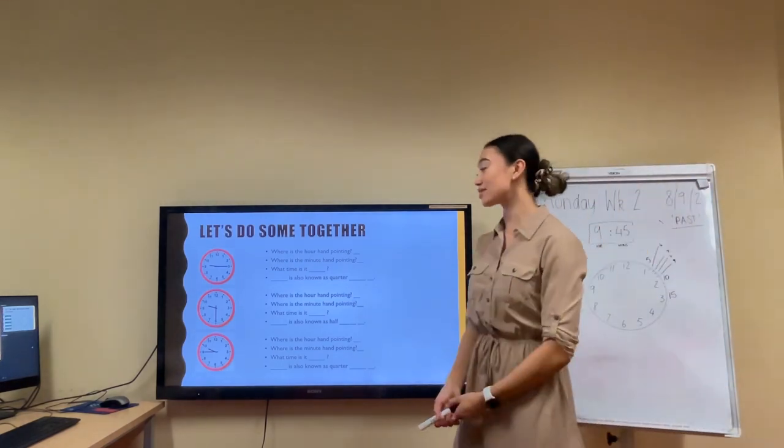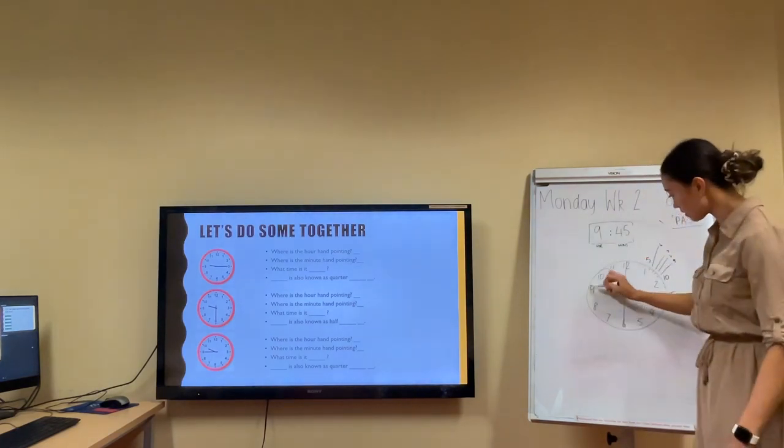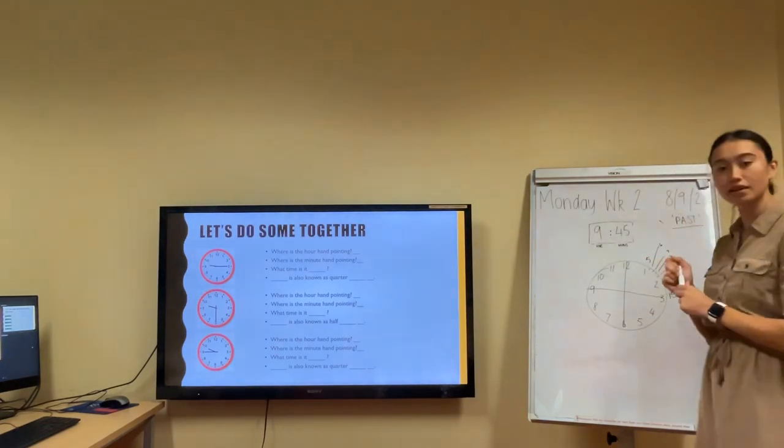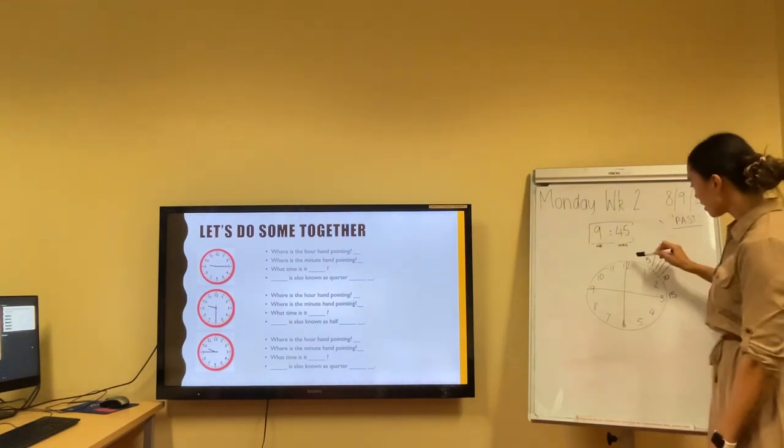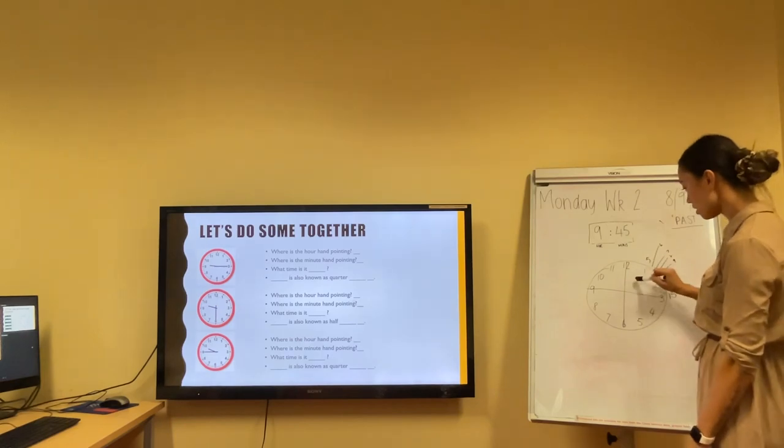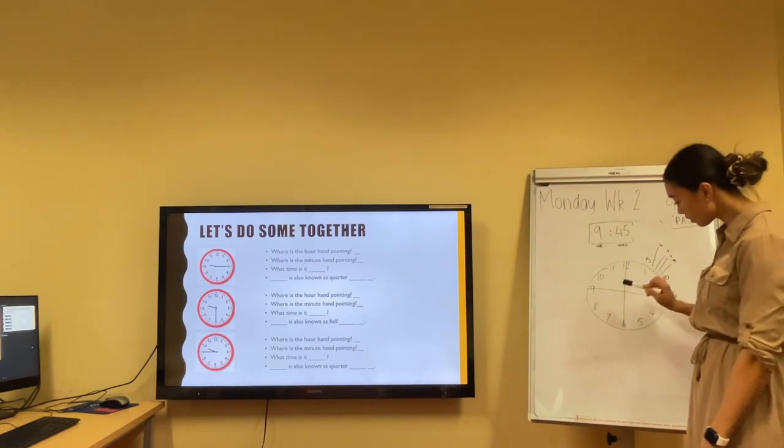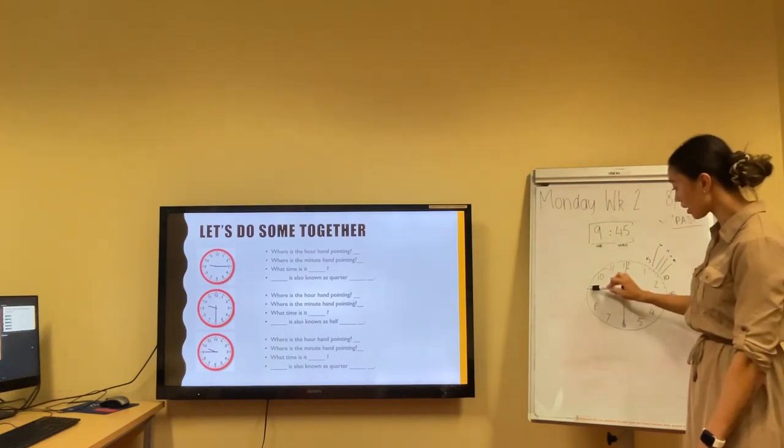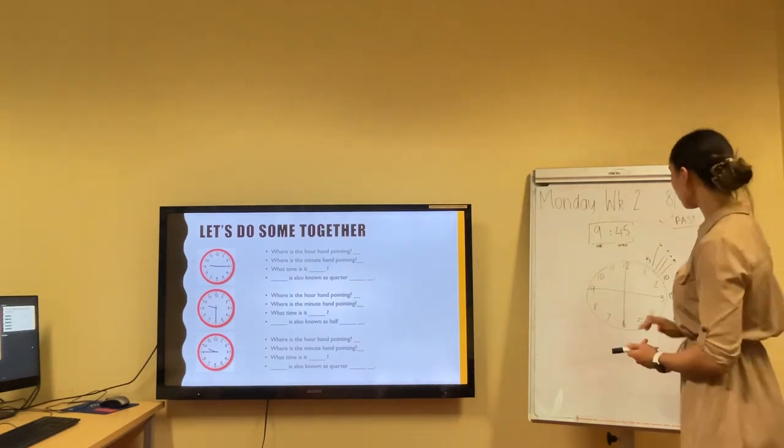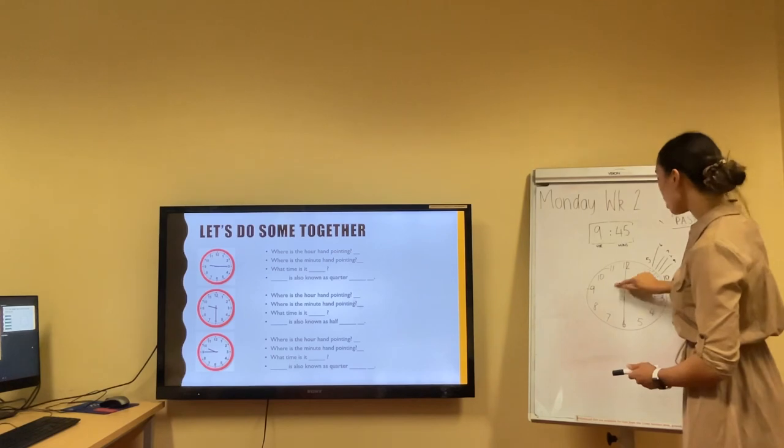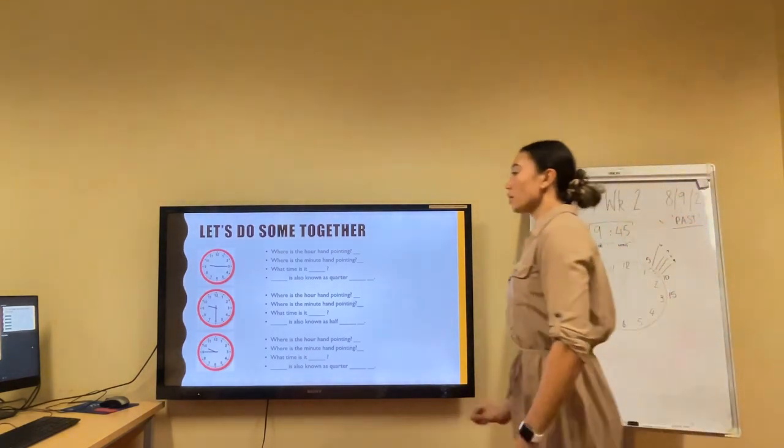So if it's 9:45 or 45 minutes past 9, what's another way we could say it? We had quarter past 9, we had half past 9. Yes, exactly. Another way we can say it Year 2 is quarter to. So on our clock, if we were to split it exactly into 4 sections, we'd have 1, 2, 3, 4 equal quarters. From here to here we know it's quarter past. From here to here we know it is half past. From here to here is another quarter. So if the minute hand is directly on the 9, that means it is quarter to.